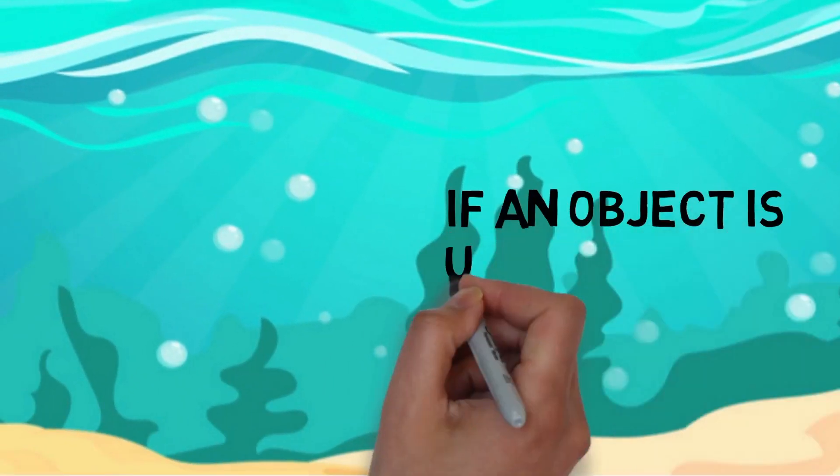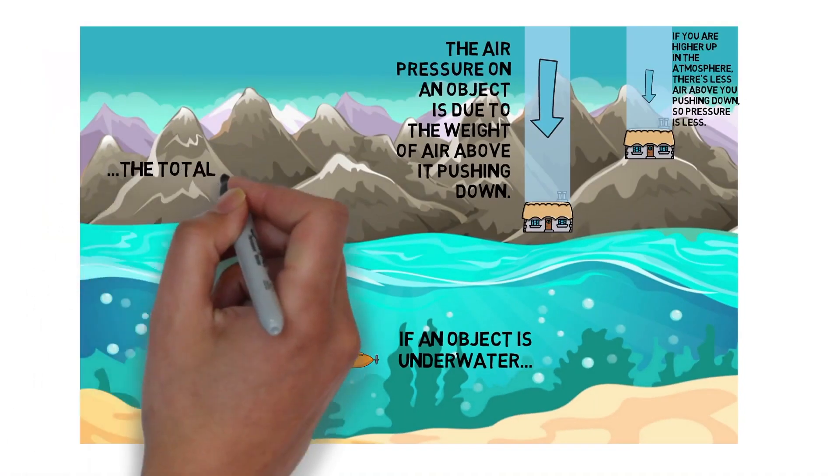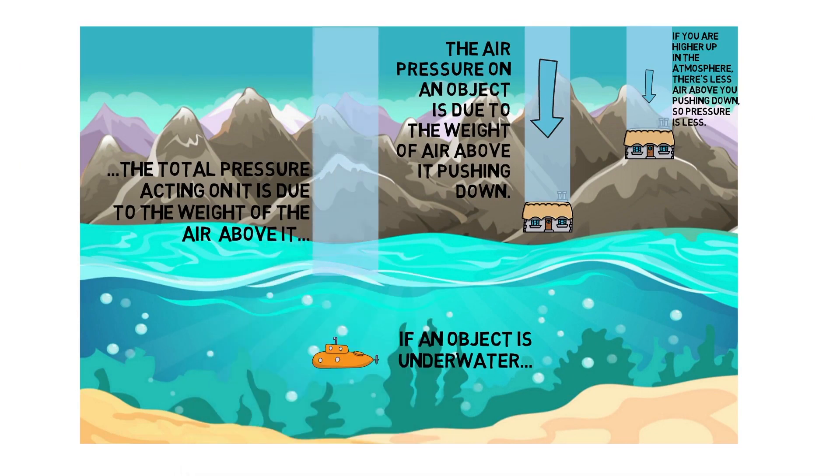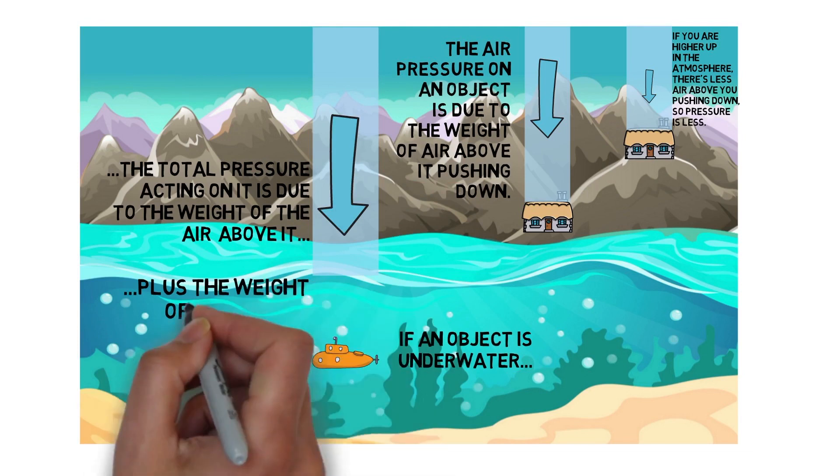If an object is under water, the total pressure acting on it is due to the weight of the air above it plus the weight of the water above it.